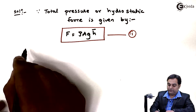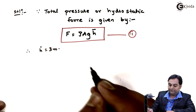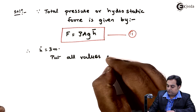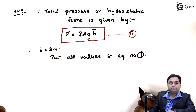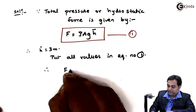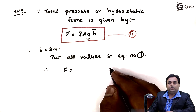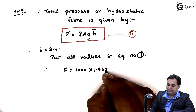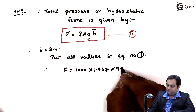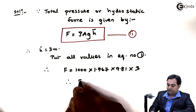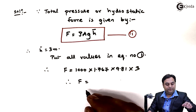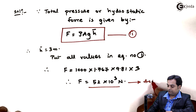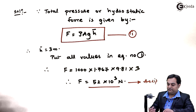Therefore H bar equals 3 meter. Putting all values in equation number one: F equals 1000 (density of water) times 1.767 (area) times 9.81 (g) times 3 (H bar). From this calculation, the hydrostatic force comes out to be 52 times 10 to the power 3 Newton. This is our first answer.